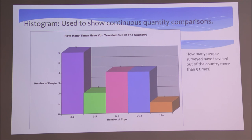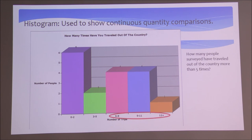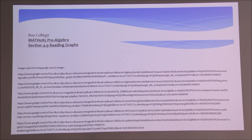If we ask how many people surveyed have traveled out of the country more than 5 times, the first column is 0 to 2 and the second is 3 to 5 — those are the values less than or equal to 5. So more than 5 times would be 6 times or more, and we can see the graph gives us that information. I'll leave it for you to total up and find the answer. This has been Bay College's video lectures for Math 085, Section 4.9, Reading Graphs. Thank you for watching.